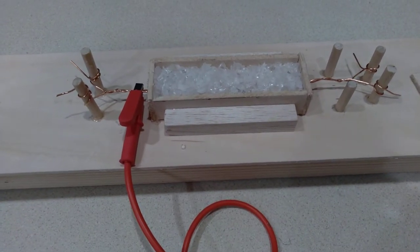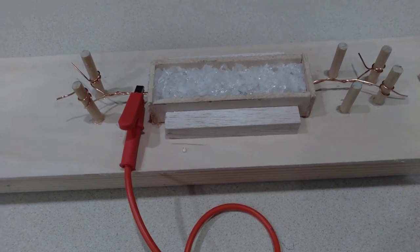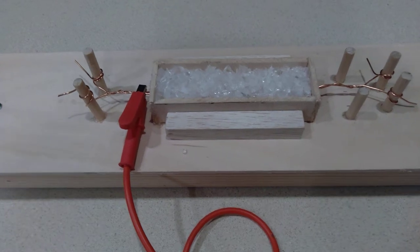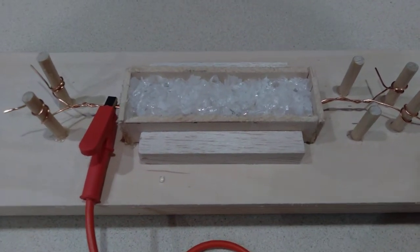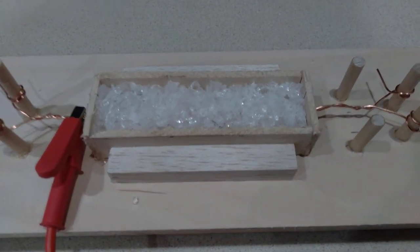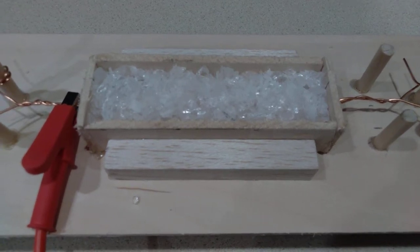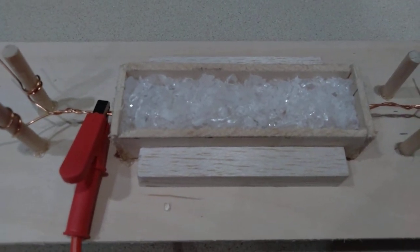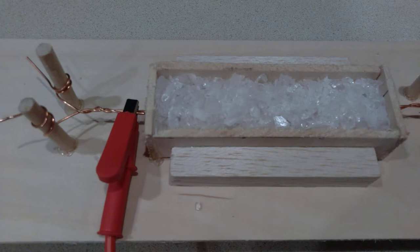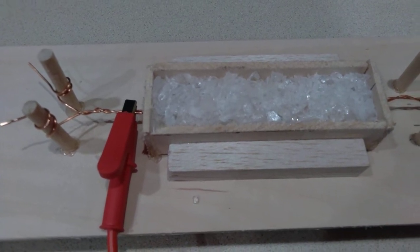Here's another way to generate AC voltage using Rochelle salt crystals. Here we have two copper wires twisted together and they're running through a bed of crystals.